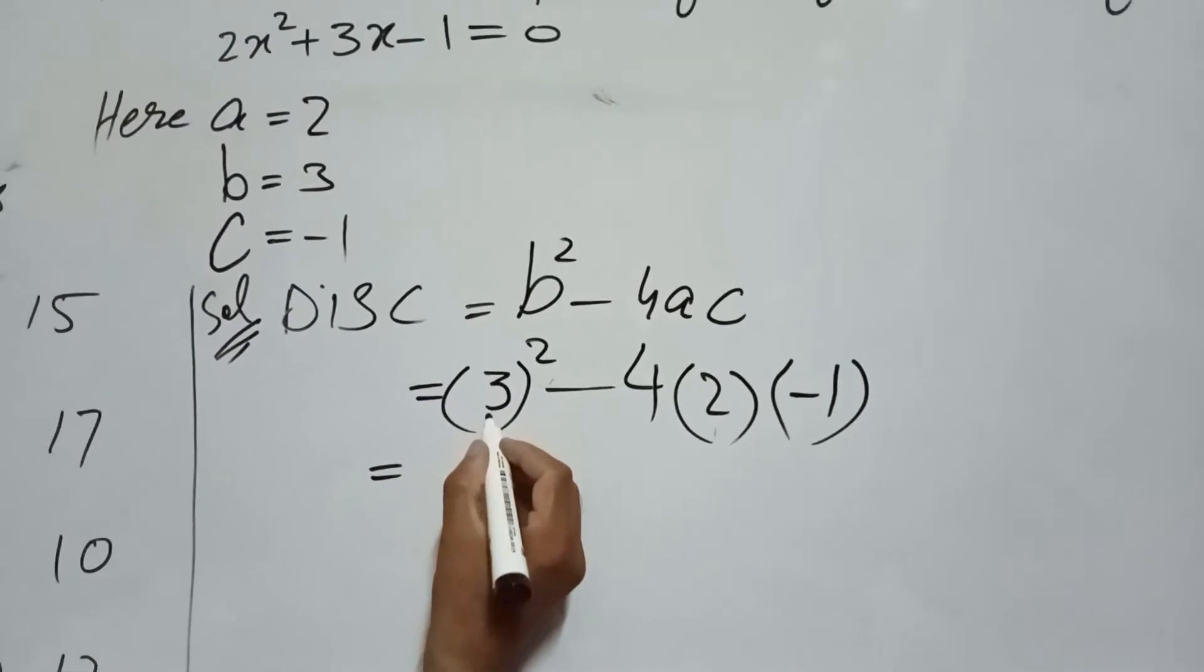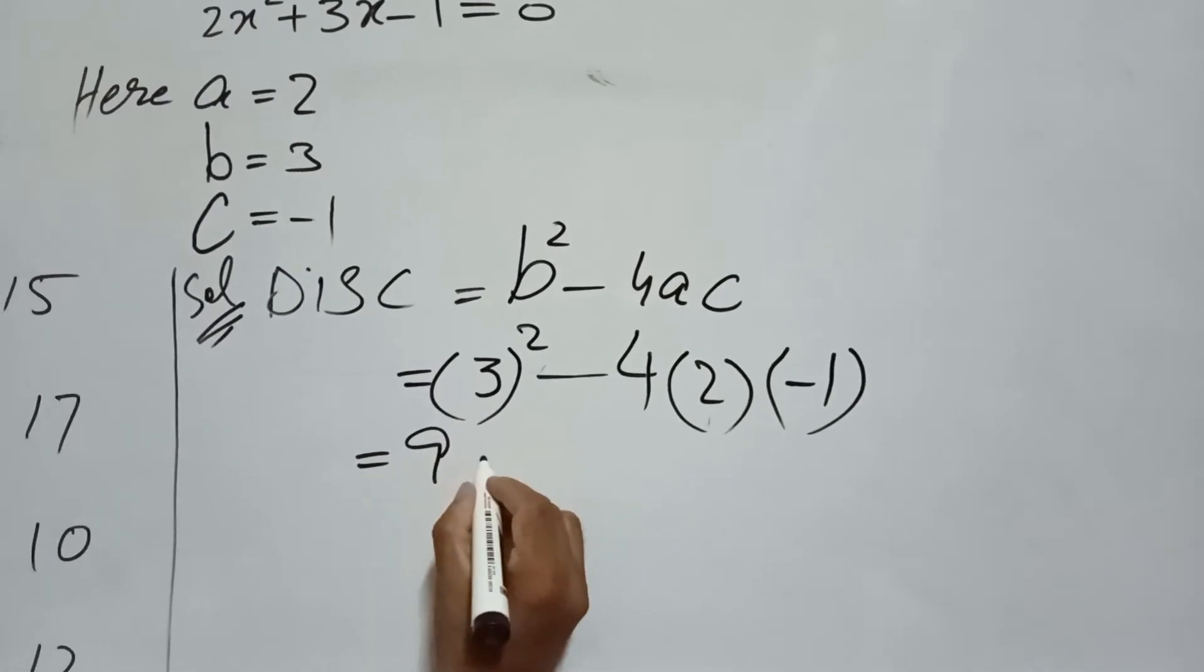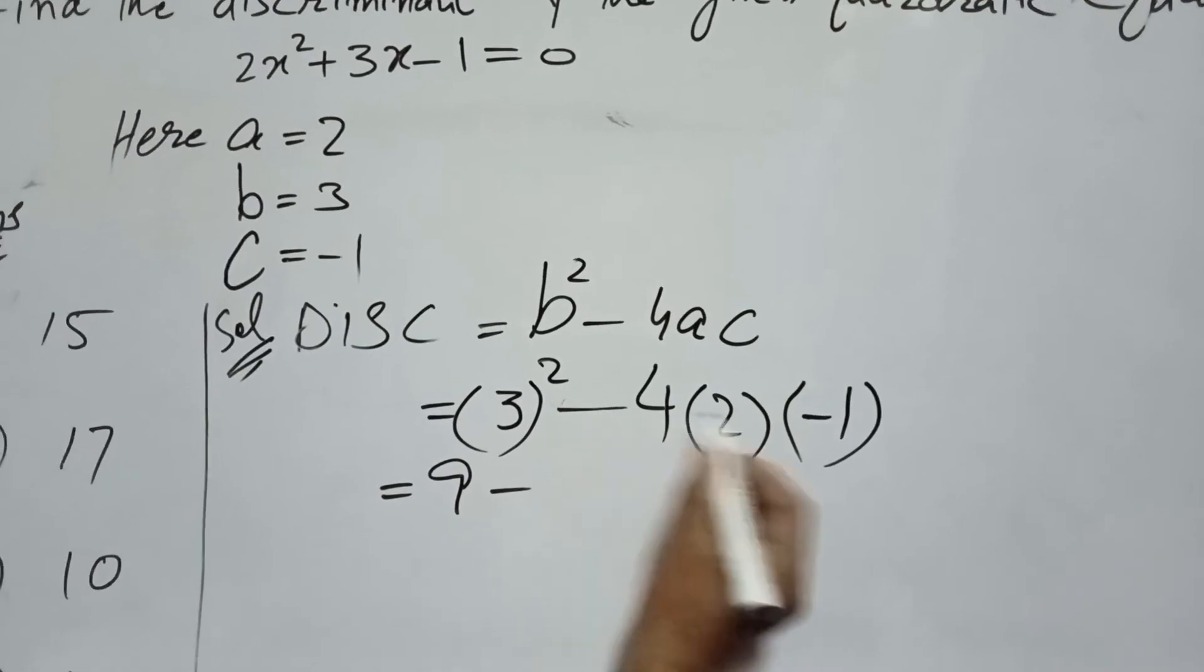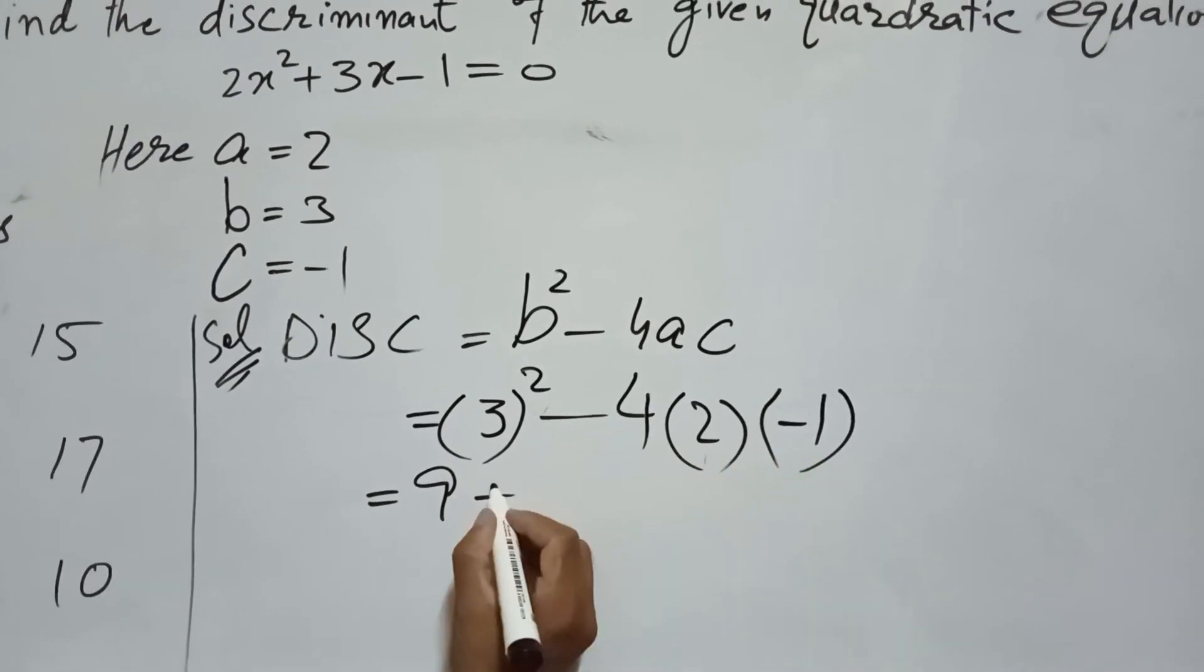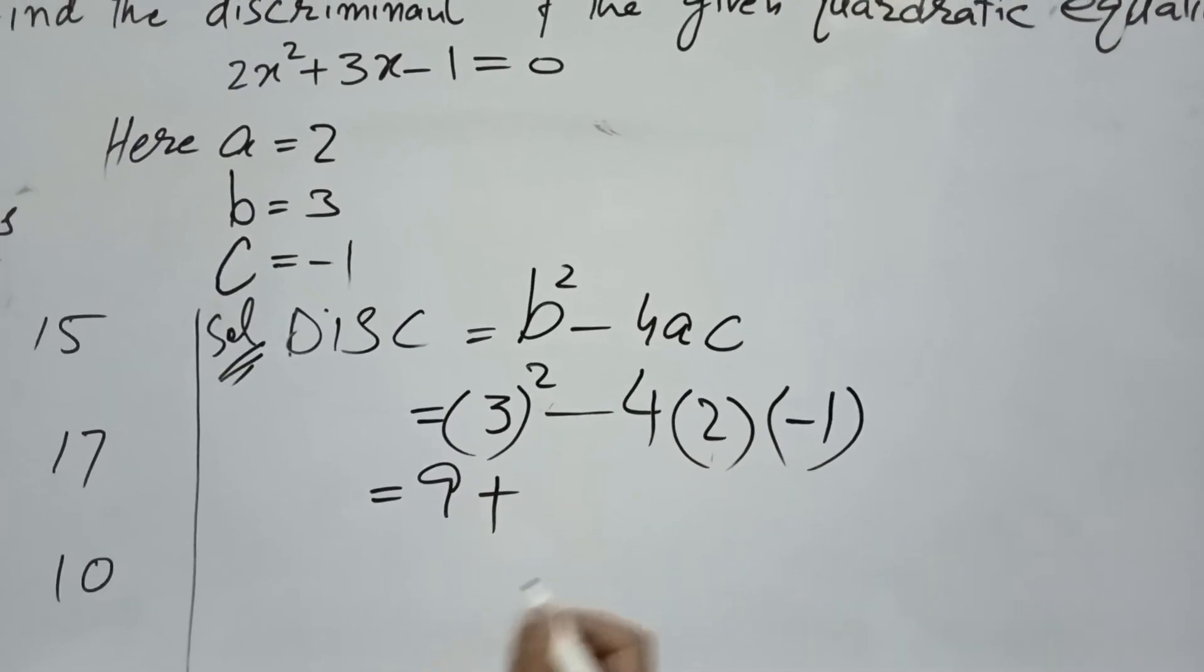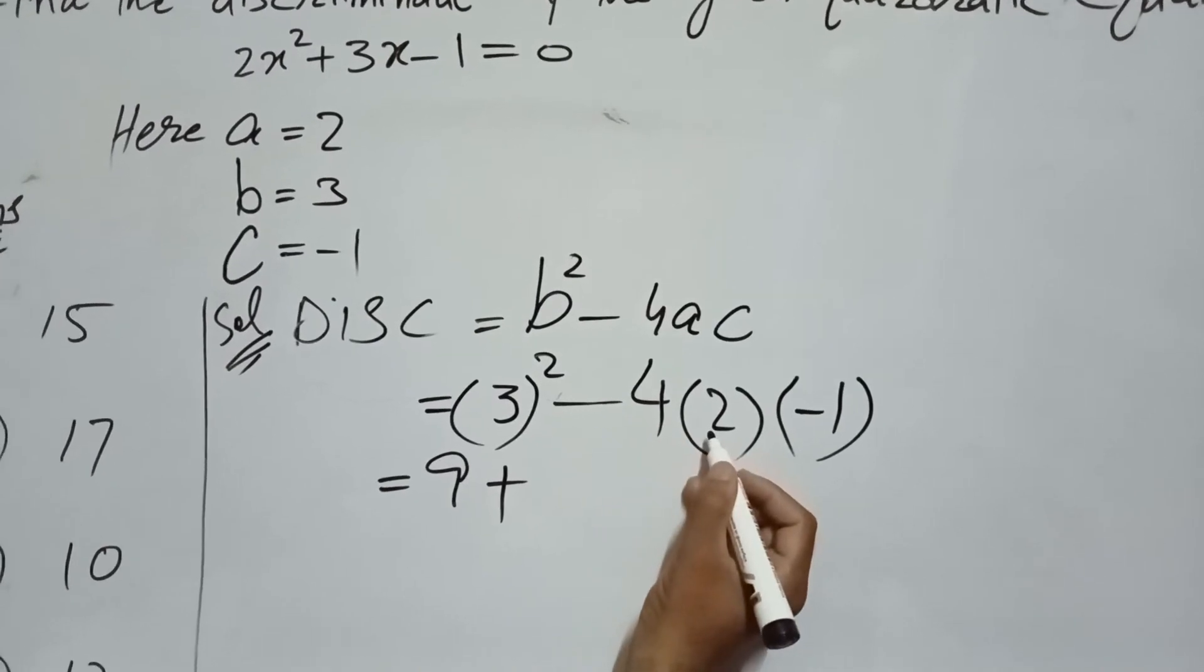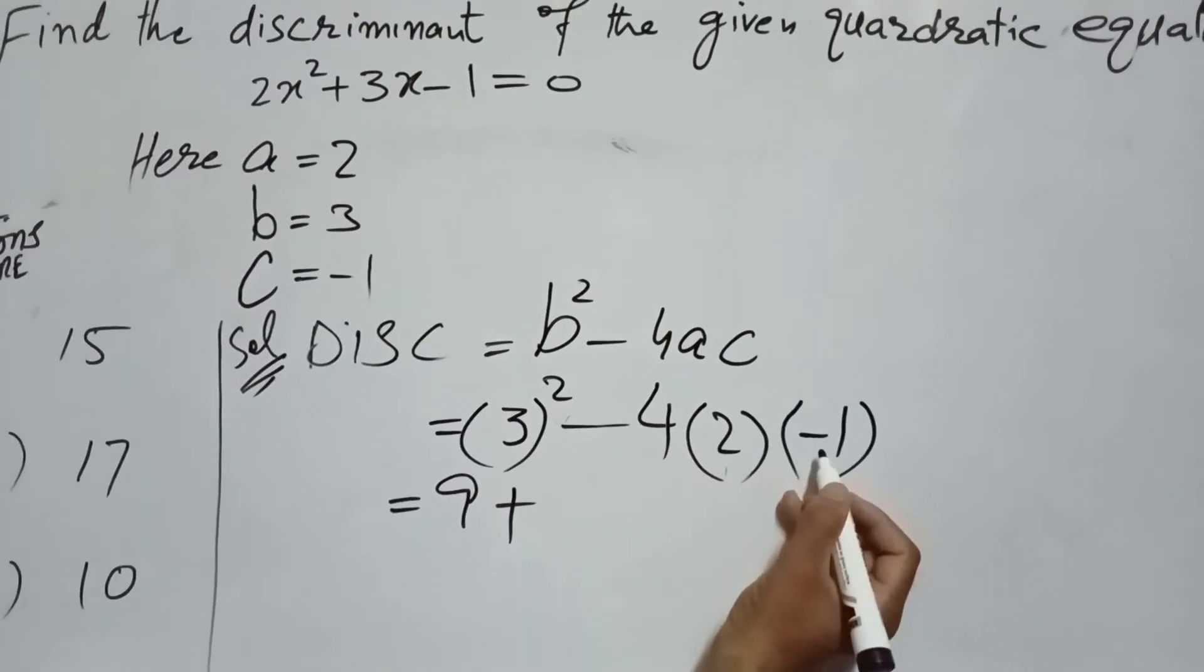Square of 3 is 9, minus. Minus multiply by minus is plus. 4 multiply by 2 is 8, 8 multiply by 1 is 8.